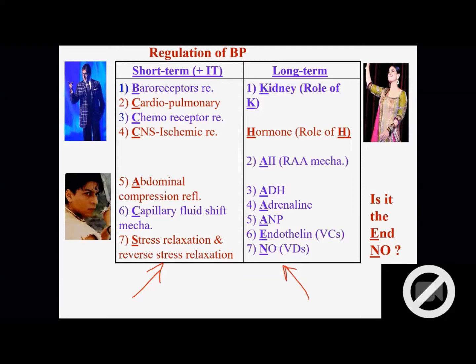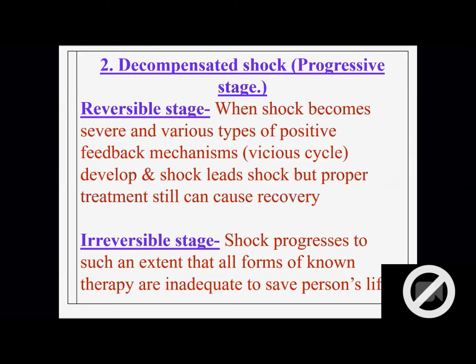And these mechanisms, they are negative feedback mechanisms. Blood pressure regulating mechanisms can be written. Long-term: kidney and hormones, especially angiotensin-II. Short-term, you have to write all the mechanisms. These mechanisms are negative feedback mechanisms which try to recover the patient.